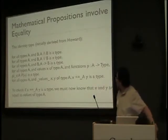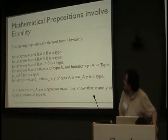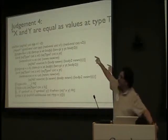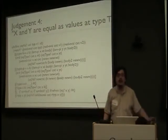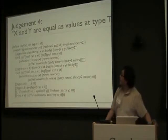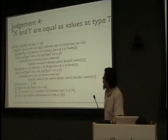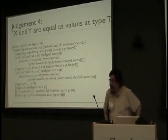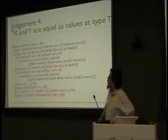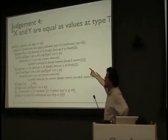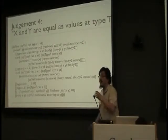To check if that's a type, we have to know that x and y are equal as values of type A. Therefore we will need our fourth and final judgment — this is a fourfold path. The four judgments of Martin-Löf's type theory, we've gotten through them all: x and y are equal values. There's a lot to go over here, and it's actually sort of important. So let's skip over the parts that look important and get to the parts that don't look important, because those are secretly the most important parts.